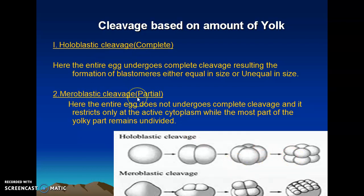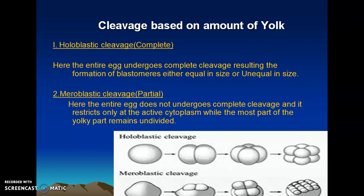The other type is called meroblastic cleavage or partial cleavage. Here, due to the availability of a high amount of yolk, cleavage takes place only at the active cytoplasm. The region occupied by the yolk will be undivided. Holoblastic equal cleavage generally takes place in microlecithal and isolecithal types of egg where the amount of yolk is very low and uniformly distributed. Meroblastic cleavage is generally exhibited by macrolecithal and mesolecithal types of egg.